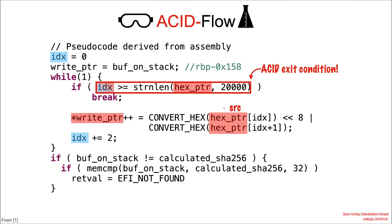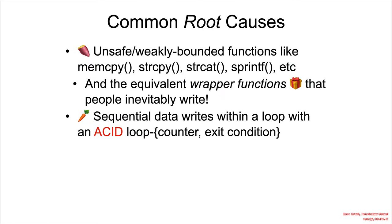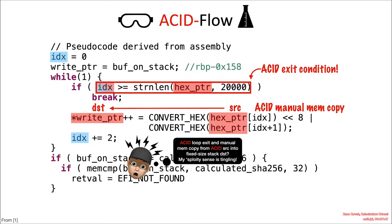That means this is effectively a manual memory move. That should cause your sploity sense to tingle, because we've got an asset loop exit condition and a manual memory copy going on inside the loop. If we consult our common root causes, we see that is the caret cause: sequential data writes within a loop with an asset exit condition. So that is not safe.